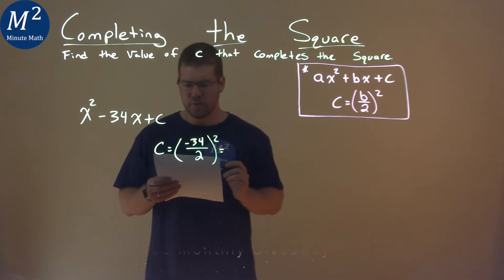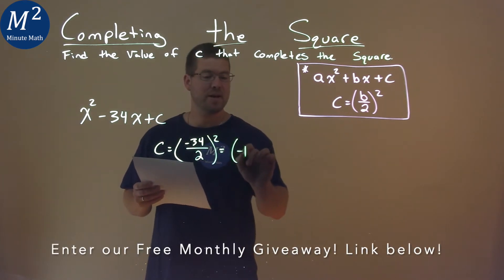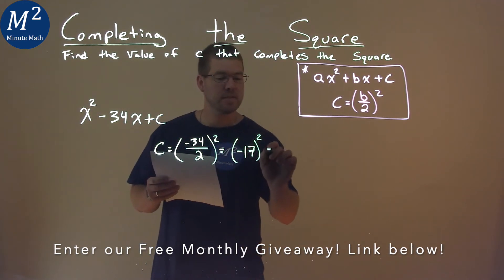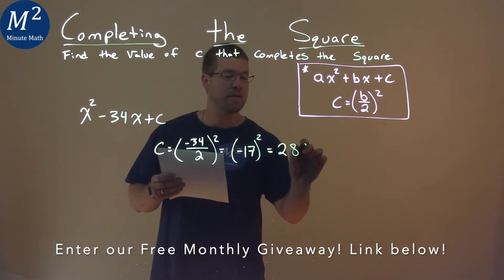Well, let's keep going. Negative 34 divided by 2 is a negative 17, and when we square a negative 17, that's a positive 289.